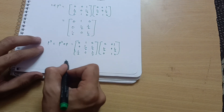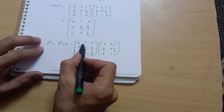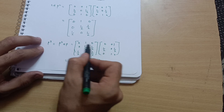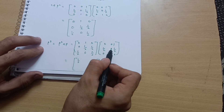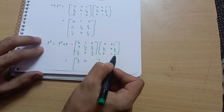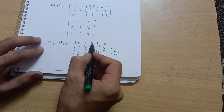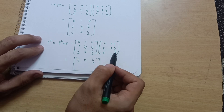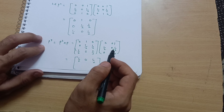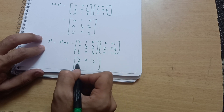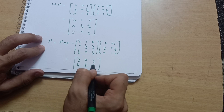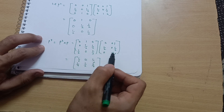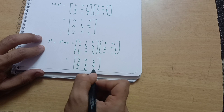For the first row of P³: first column = 0×0 + 1×(1/2) + 0×0 = 1/2; second column = 0×0 + 1×0 + 0×1 = 0; third column = 0×1 + 1×(1/2) + 0×0 = 1/2. I will directly write the remaining values. Second row = [1/4, 1/2, 1/4]. Third row = [0, 1/2, 1/2]. So P³ = [[1/2, 0, 1/2],[1/4, 1/2, 1/4],[0, 1/2, 1/2]].